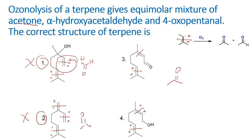The best approach is to look at the molecule and see if there is something different that does not match with the given options. In the case of options one and two, formaldehyde is one of the cleavage products and that is not one of the options given, so options one and two are ruled out.